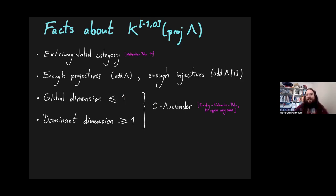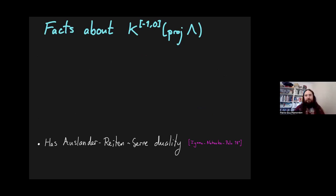One more thing I want to say about this category is that it has Auslander-Reiten theory, or Auslander-Reiten Serre duality in the sense of Nakaoka and Palu. In particular, it has almost split conflations, or Auslander-Reiten conflations. It has an Auslander-Reiten quiver, which you might like to try and draw.